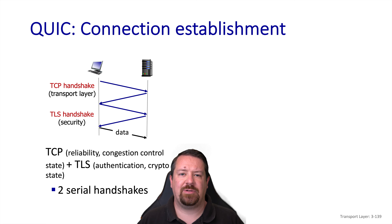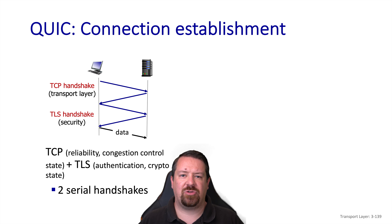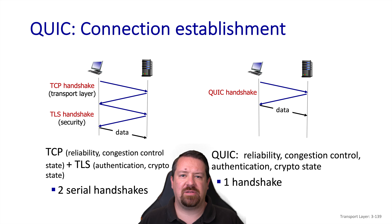Let's compare the connection establishment. TLS requires an additional handshake after the TCP session is established, so this means two round trip times are spent with the TCP connection followed by the TLS handshake before data can be sent. In contrast, the QUIC handshake handles both the connection setup and the security handshake in one round trip time.